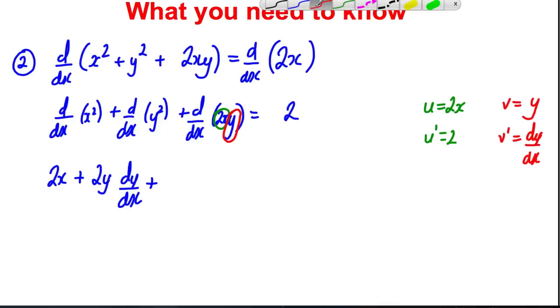So when we apply the product rule here, what we do is we'd say u v dash, so we'd say plus 2x v dash, which is dy dx, and then we'd say plus v u dash, which would be plus 2y, equal 2.